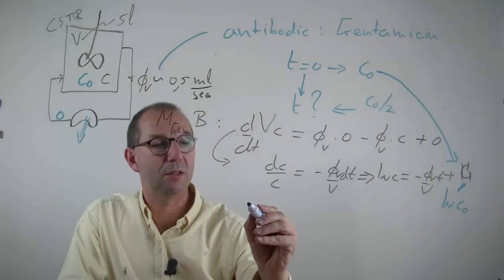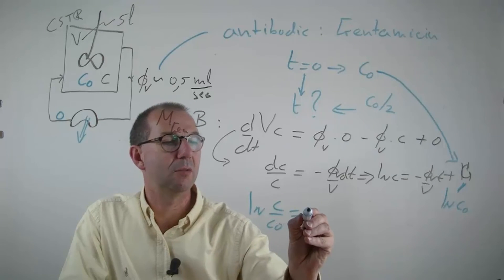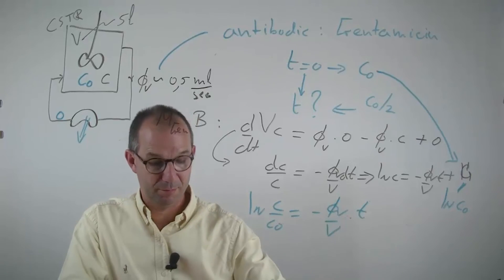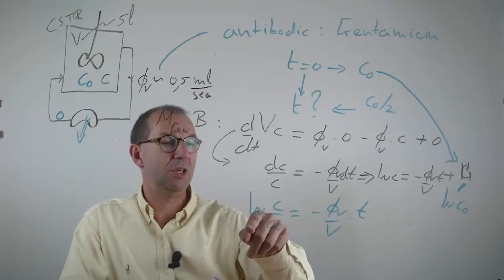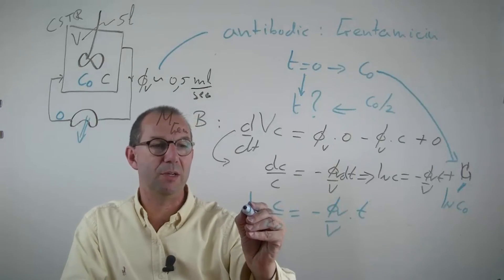And thus we can write a solution, logarithm C over C₀ equals minus V̇/V times time. And you see that the concentration decreases, that's what our kidneys do. And you see that I can easily answer now the question.